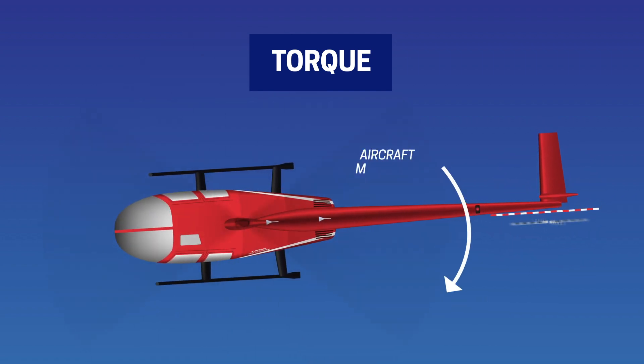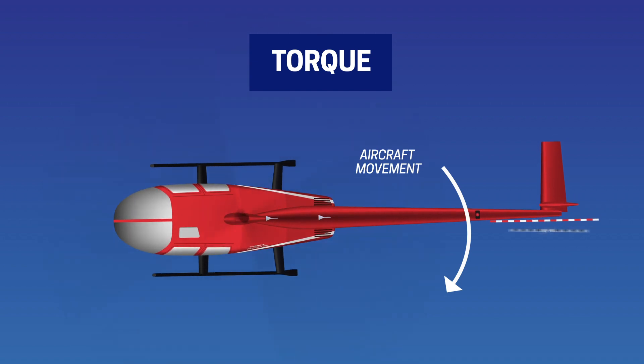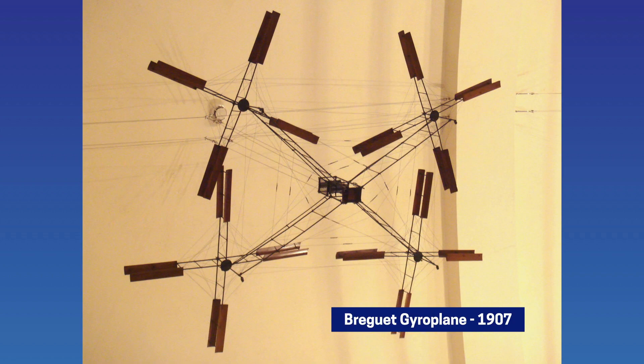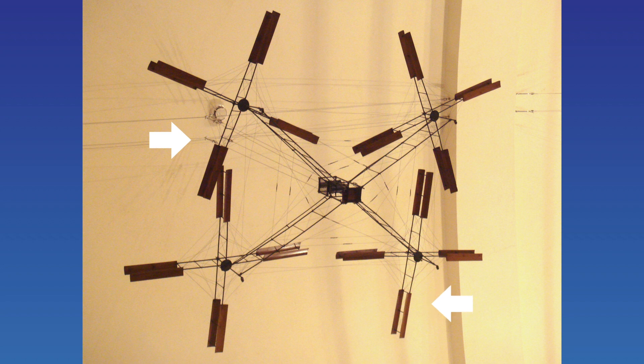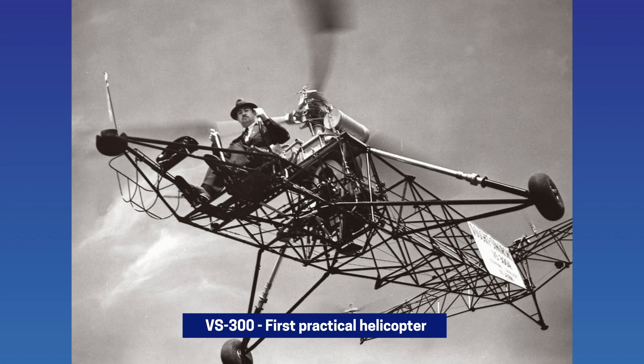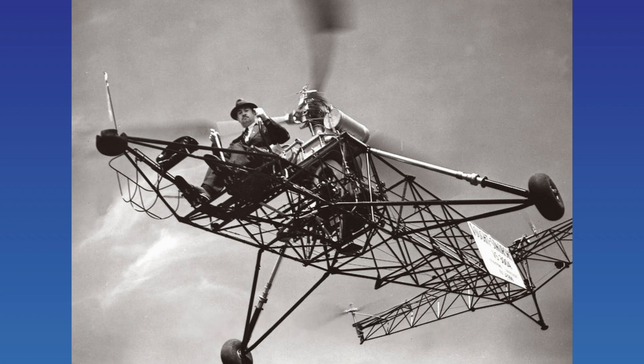The tail rotor was just one of many ways pioneers tried to combat this force. The development of helicopters has been around for almost as long as aeroplanes, with the first flight taking place in 1907, just three years after the Wright brothers took flight. Many developers tried to combat torque using two or even four sets of counter-rotating main rotors next to or above each other to cancel out these forces. It was only in 1932 that the Soviet Union, now Russia, developed a helicopter with what we today know as a tail rotor.